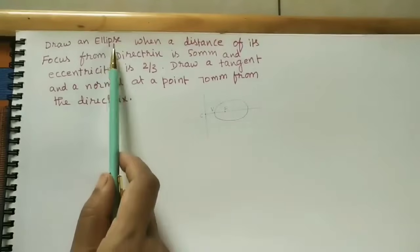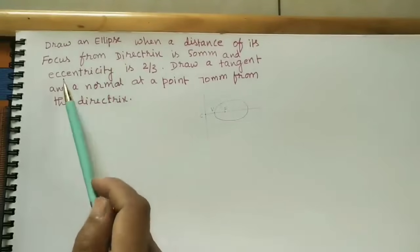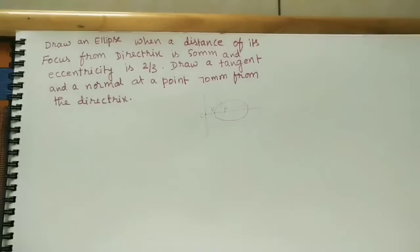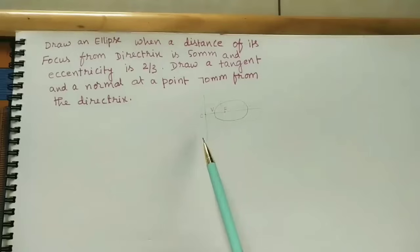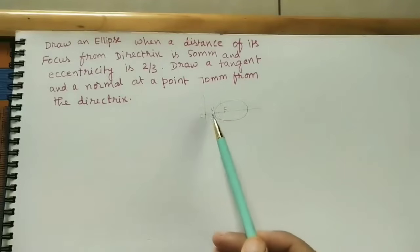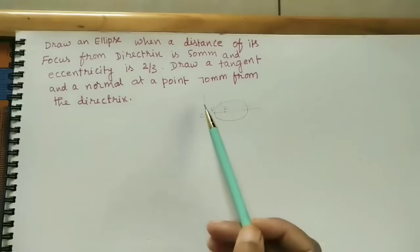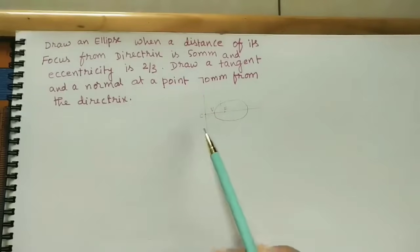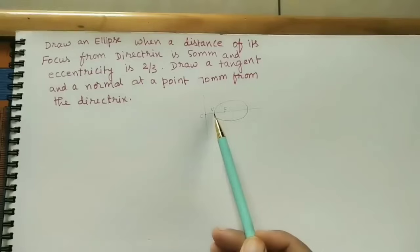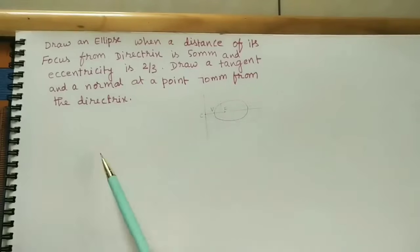Let us discuss how to draw an ellipse using the eccentricity method. We will get the ellipse like this. It has one fixed point called the focus, and one fixed straight line called the directrix. This line is the axis. The intersection point of the directrix and axis is point C. On the axis, V is one of the points of the ellipse.